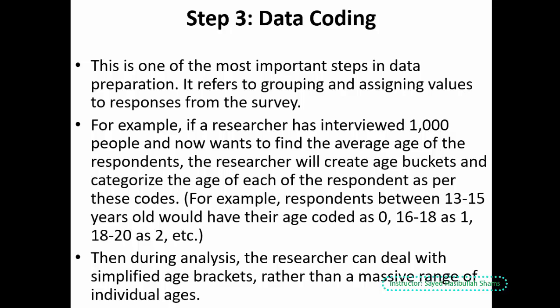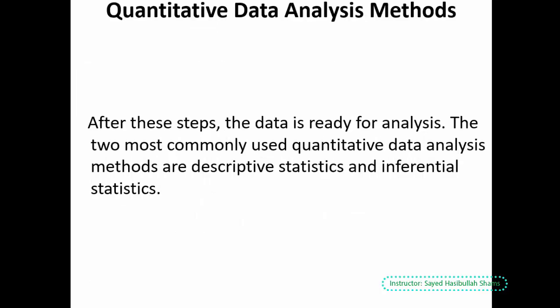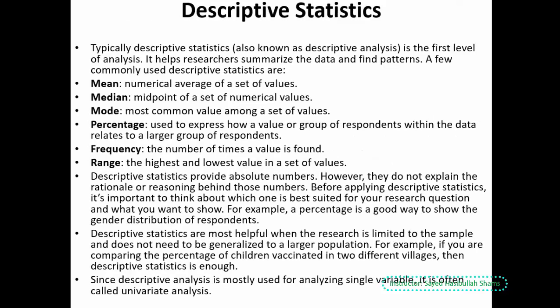For quantitative analysis, we must consider these three steps: the first is data validation, the second is data editing, and the third is data coding. Once we have coded our data, we can use different statistical methods. We have descriptive statistics — such as mean, median, mode, percentage, frequency, range, and standard deviation — and we also have inferential statistics used for more complex topics, such as correlation and t-tests.